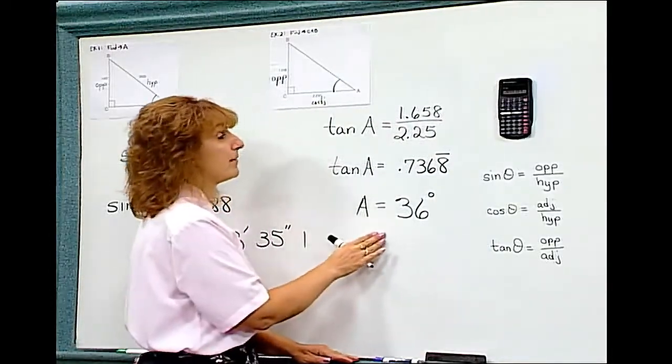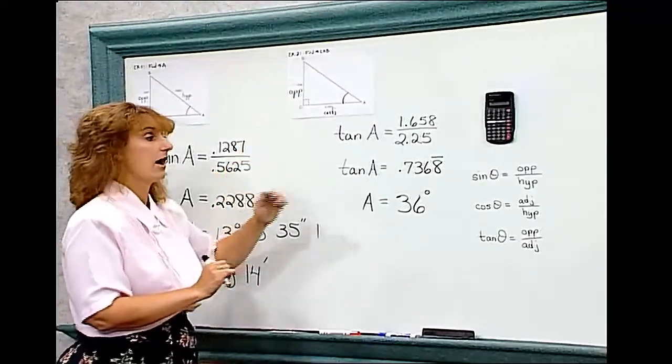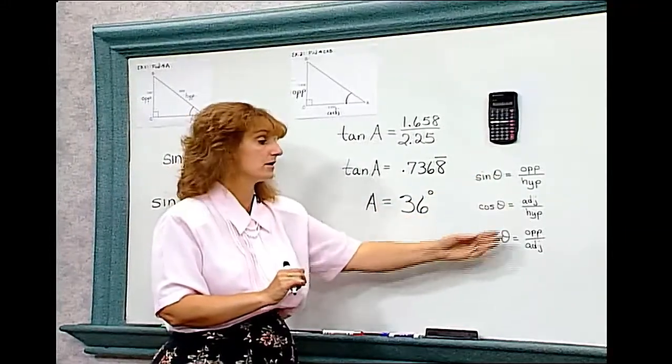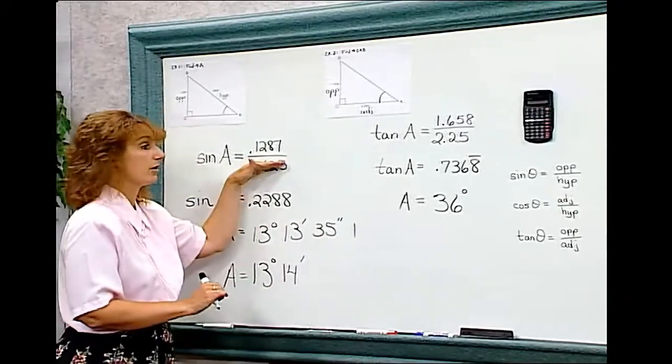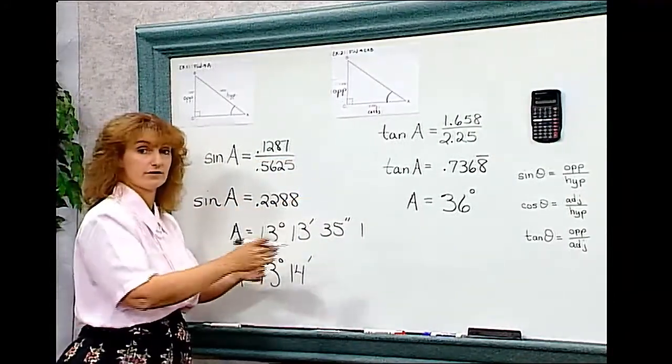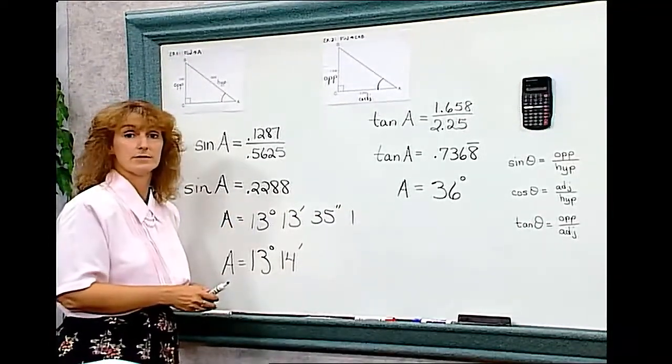So remember, when you solve these problems, you need to find out which side you have. Opposite and hypotenuse, adjacent and hypotenuse, opposite and adjacent. Choose the right ratio, do the division, use your second trig function, and then change your answer into degrees, minutes, and seconds.